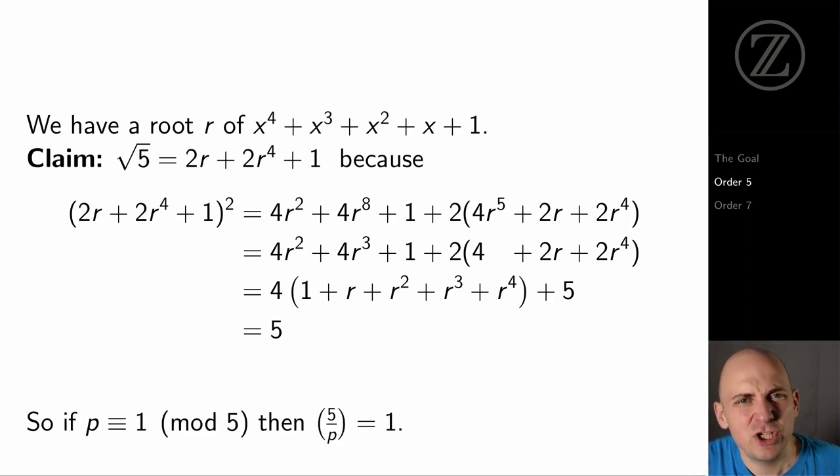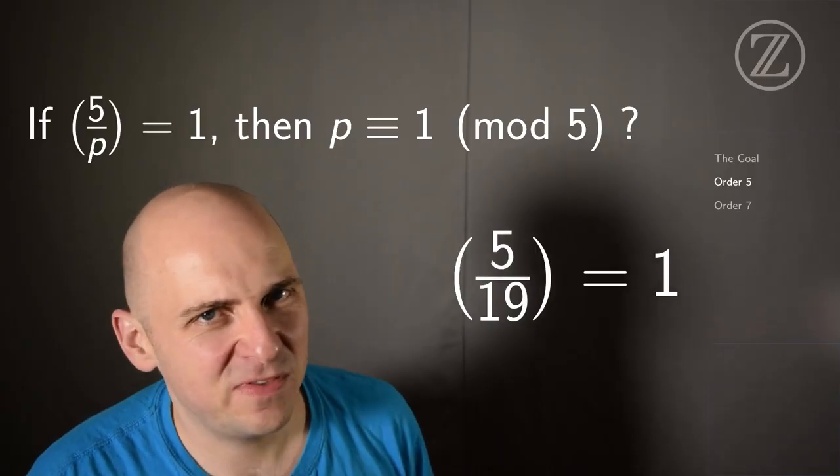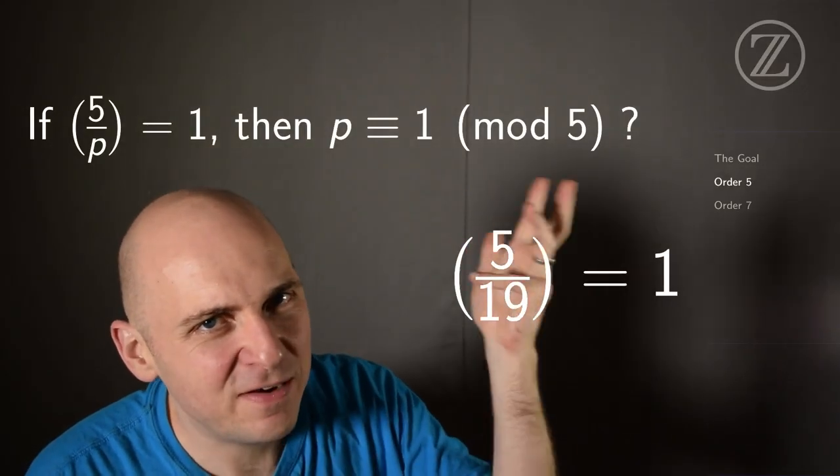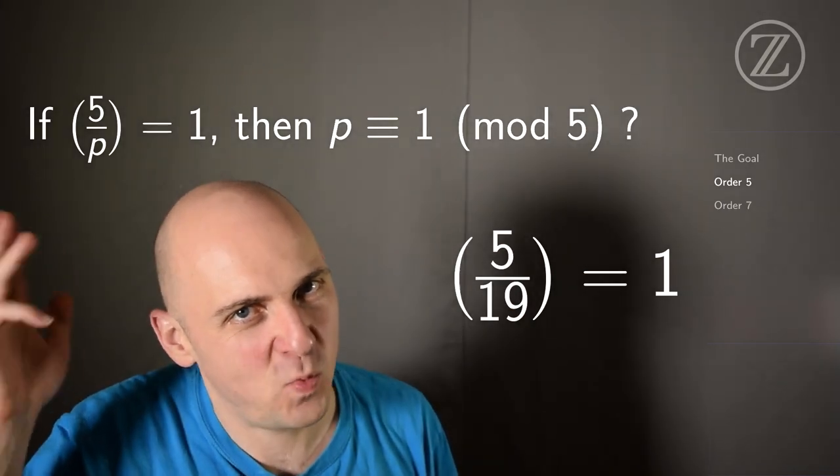So what's the conclusion? What have we actually shown? Well, at the beginning, we assumed that p was 1 mod 5. So p is a prime, which is 1 mod 5, like 11 or 31. And in that case, we've exhibited a square root of 5. We've actually produced an element in U_p that when I square it, I get 5. And that means that 5 on p is 1. So we just showed that if p is 1 mod 5, then 5 on p is 1.